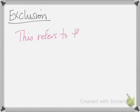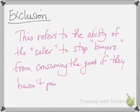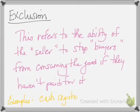Exclusion is the idea that you can stop someone from consuming the good if they haven't paid for it — the ability of the seller to stop people who haven't paid from consuming the good. Examples of things put in place for goods that have exclusion: people have to face a cash register at stores, there are locks on doors, or there are security tags. All of those provide some type of barrier to exclude someone who hasn't paid from obtaining or using the good. So, we have rivalry in consumption and exclusion.